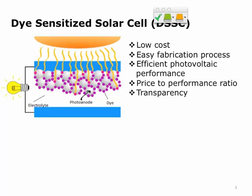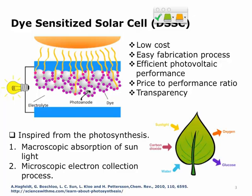I recently saw research where dye-sensitized solar cells are already in the market — they're being put on sunglasses and powering iPods and similar devices. The dye-sensitized solar cell concept has been inspired from photosynthesis in plants, where plants absorb sunlight in the chlorophyll, perform photolysis of water into hydrogen and oxygen, and carry out microscopic electron collection processes.